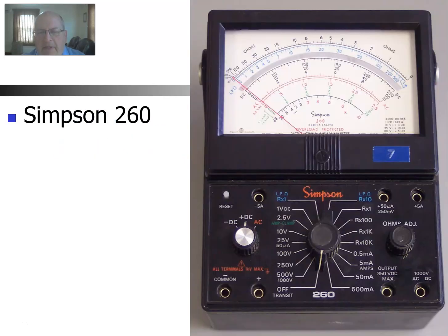For today's video, we're going to look at the Simpson 260 meter. It's a classic meter that's been around for many years. There are a number of variations of it, and it continues to be sold and is still quite popular with technicians that use an analog meter.